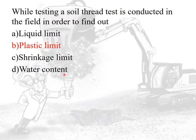For the determination of water content, the following methods are used: oven drying method, torsion balance, pycnometer method, sand bath method, alcohol method, calcium carbide method, and radiation methods. Among all, oven drying is the most accurate method.